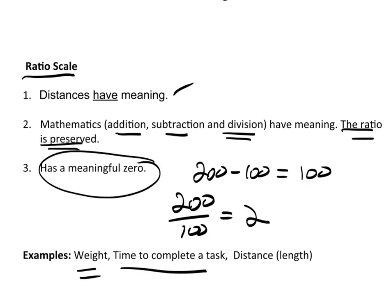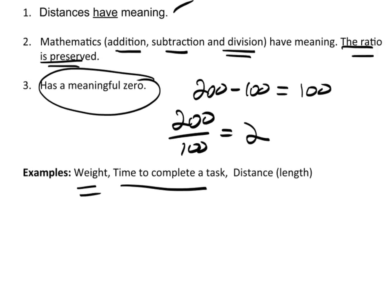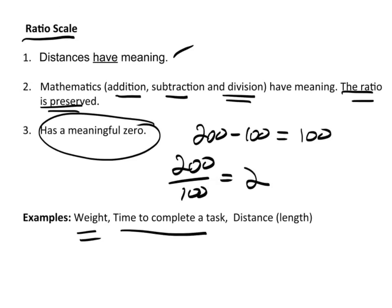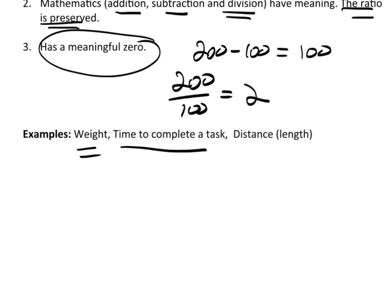Time to complete a task. That's another ratio scale. See, that's not like the historical time, because time to complete a task has a natural zero. So, we're going to take a quiz. Everybody has their pencils up. Ready, set, go. Well, the go was time zero. That's when we started.